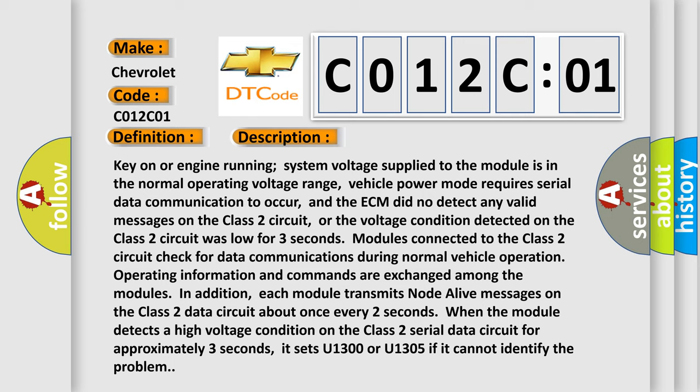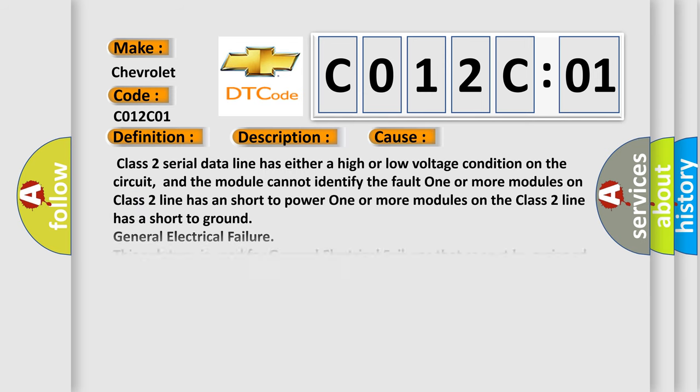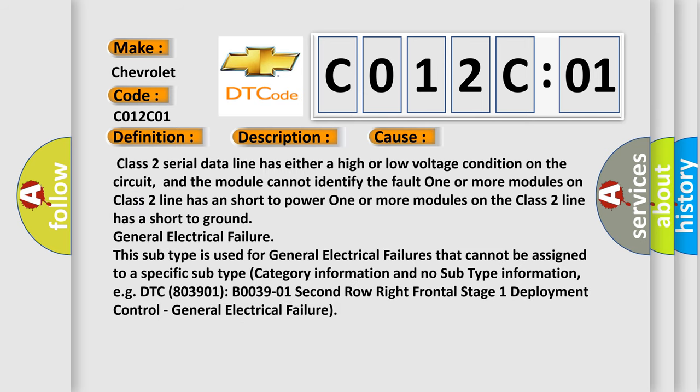This diagnostic error occurs most often in these cases. Class 2 serial data line has either a high or low voltage condition on the circuit, and the module cannot identify the fault. One or more modules on Class 2 line has a short to power.